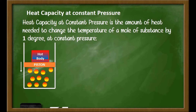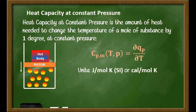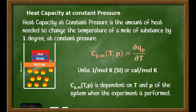Heat capacity at constant pressure is the amount of heat needed to change the temperature of a mole of substance by 1 degree at constant pressure. Mathematically, the molar heat capacity at constant pressure is the differential of the heat exchanged at constant pressure over the differential of the temperature. In terms of units, heat capacity in the international system is represented by joules per mol times Kelvin, or more commonly in calories per mol times Kelvin. The heat capacity at constant pressure is dependent on the temperature and pressure of the system when the experiment is performed.